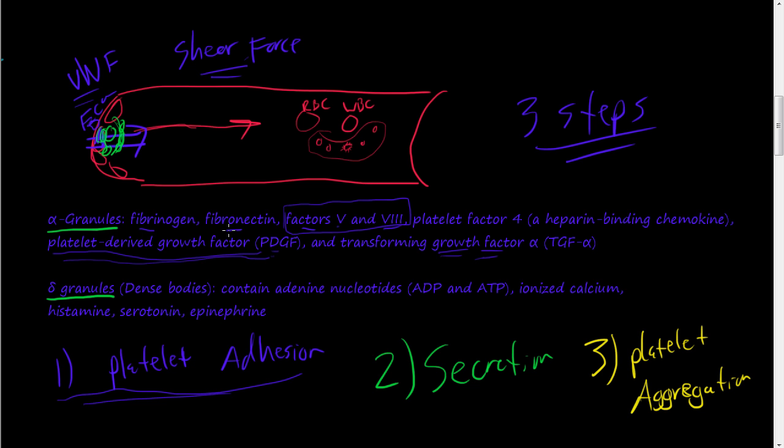And the third one is platelet aggregation. So these platelets aggregate or accumulate here, and ADP right here is a very potent stimulus for these other platelets to gather around. So once you first get these original platelets here,